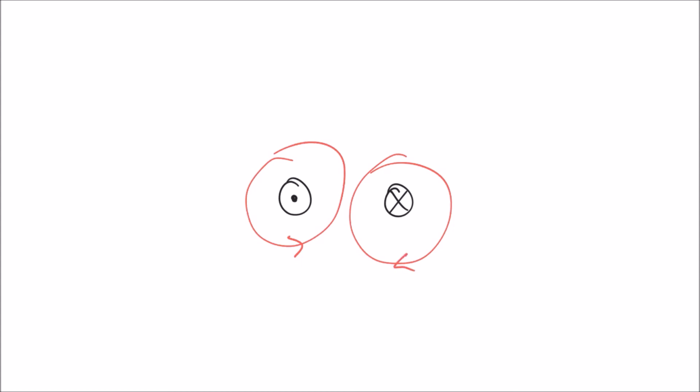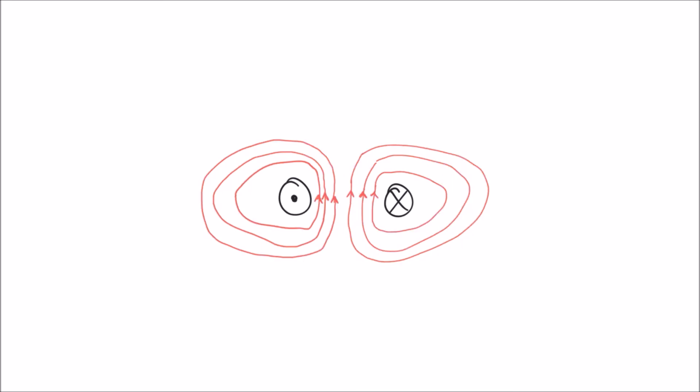When these two conductors approach one another, their magnetic fields are traveling in different directions and oppose each other. They push each other's field lines away, creating a separation and deformation between the two fields. Because the two magnetic fields repel one another, the conductors themselves are physically pushed away from one another.